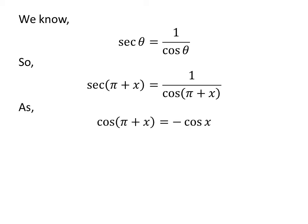We also know the trigonometry identity cosine of pi plus x is equal to minus cosine of x. The proof of this trigonometry identity has been explained in the video appearing in the upper right corner. The link of the video has also been mentioned in the description section.